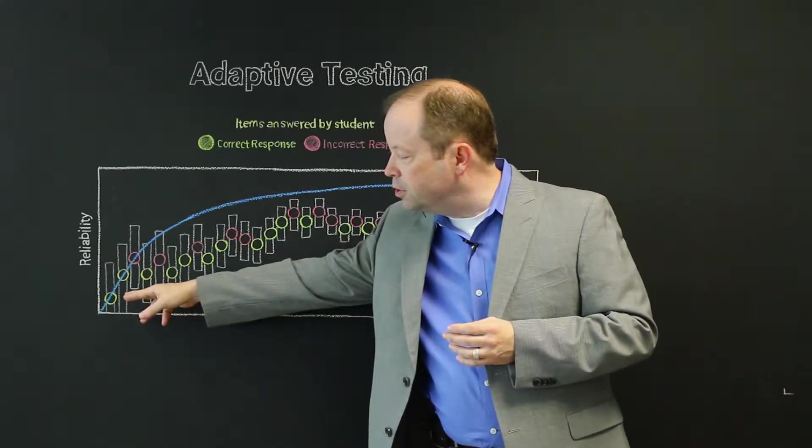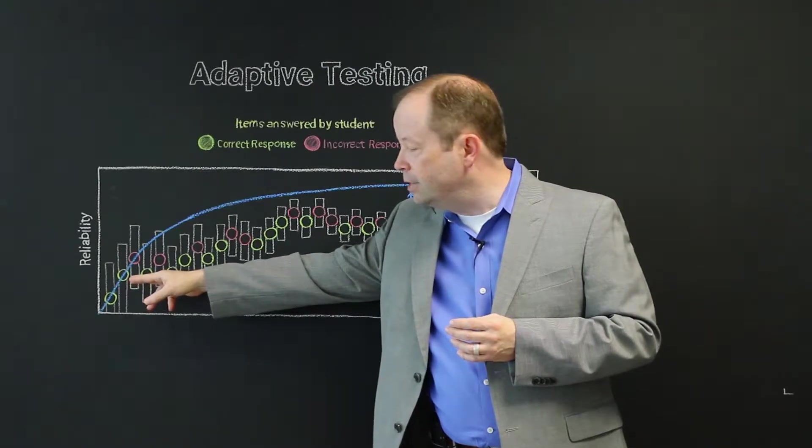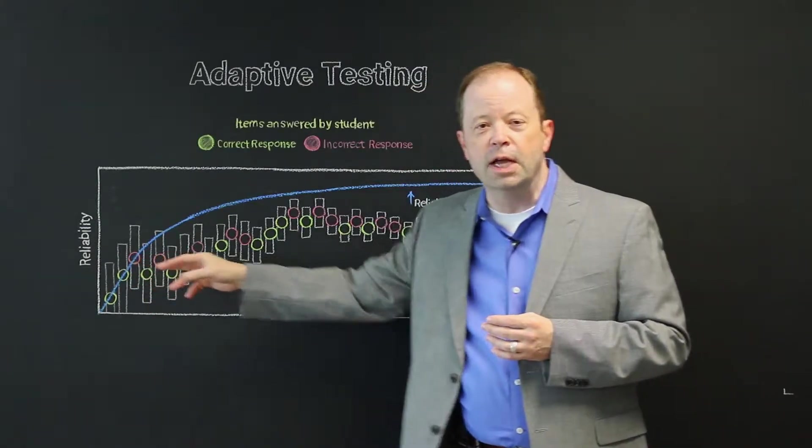In this case, the student answers the first question correctly, and as a result of a correct answer there, they get a harder question. They answer that one correctly, and on the third one, it's a bit harder, and they give an incorrect answer.